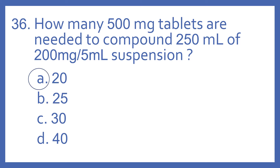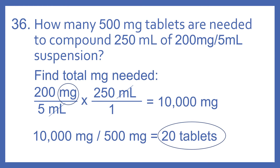The answer is A, 20. So we're going to find the total milligrams that we need. If we have 200 milligrams per 5 milliliters, we'll multiply that by 250 milliliters. We have a milliliter on the top and a milliliter on the bottom, so milliliters cancel, and we'll be left with milligrams.